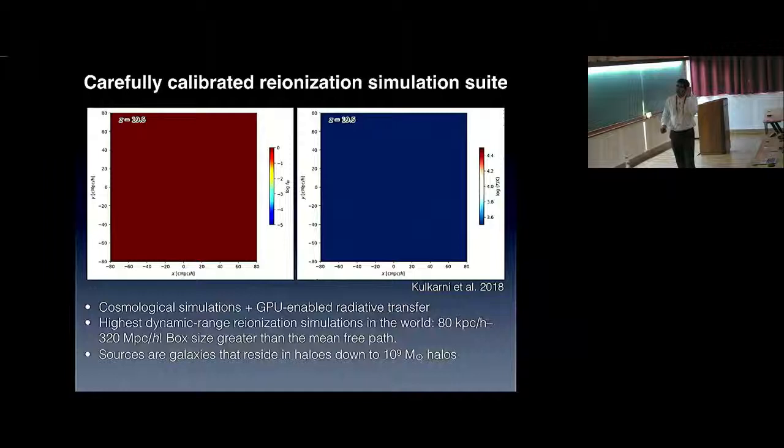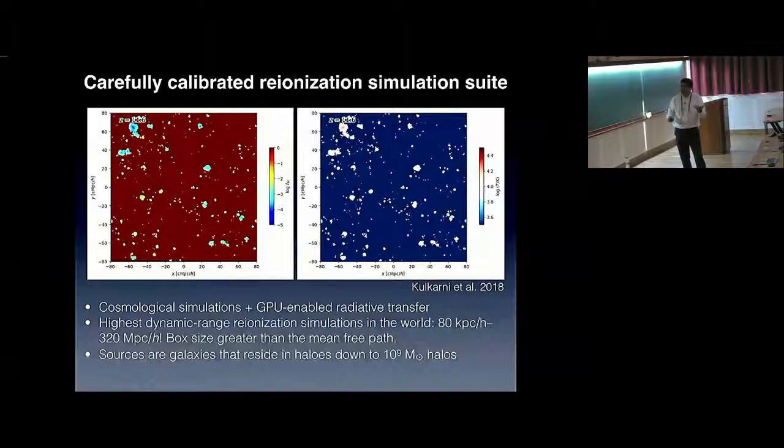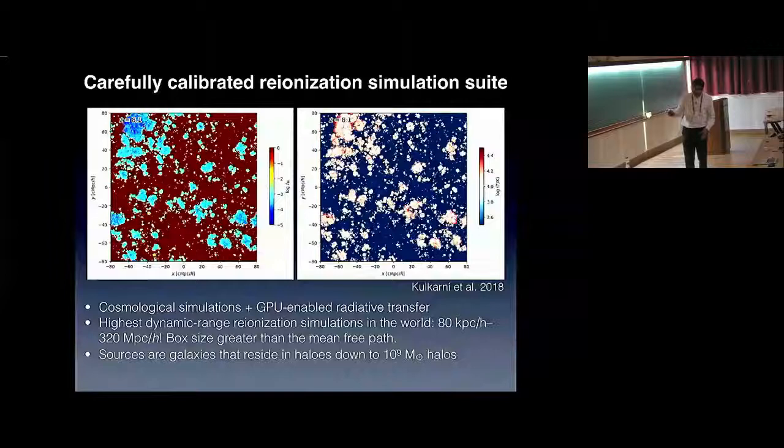What we had been doing while these results were coming out was developing reionization simulations. Reionization is a difficult problem; one requires numerics to solve that, and even then it's not easy. We've been using something called the M1 method of doing radiative transfer, and we use GPUs to speed these up. Thanks to these innovations, what we've managed to achieve is simulations that have the highest dynamic range on the planet, which probe somewhere around 80 kiloparsecs to 320 megaparsecs.